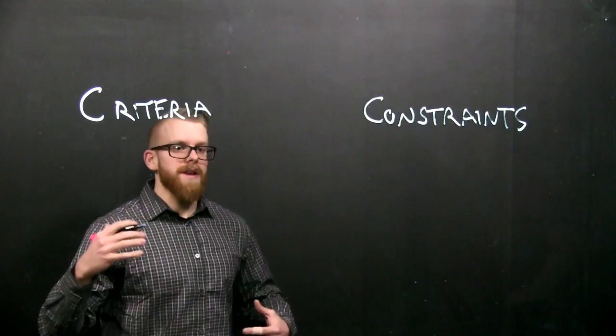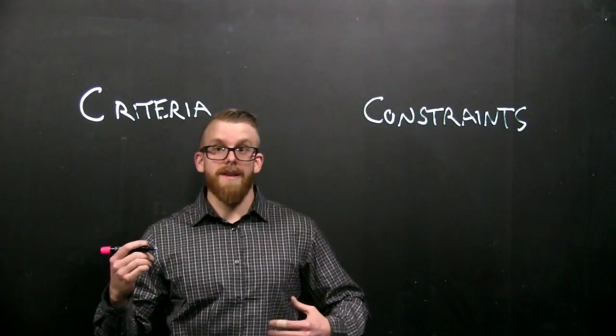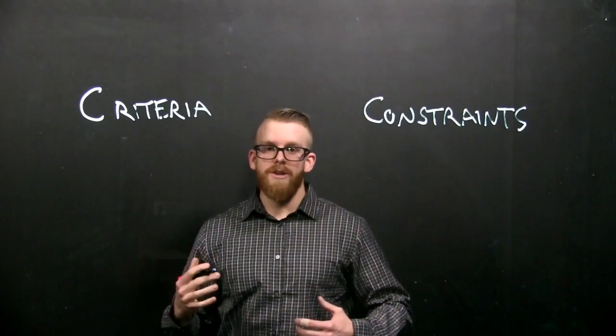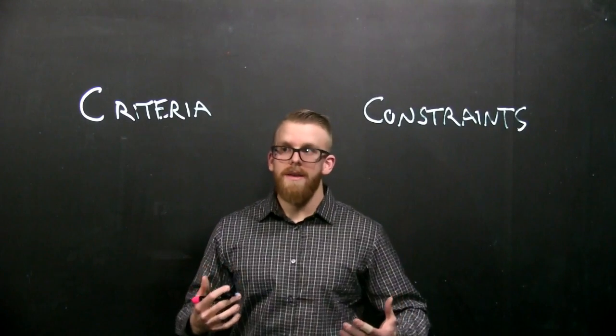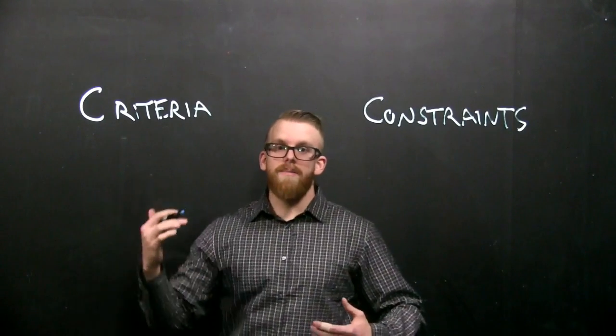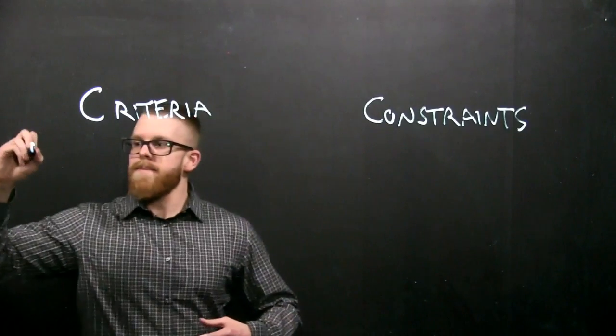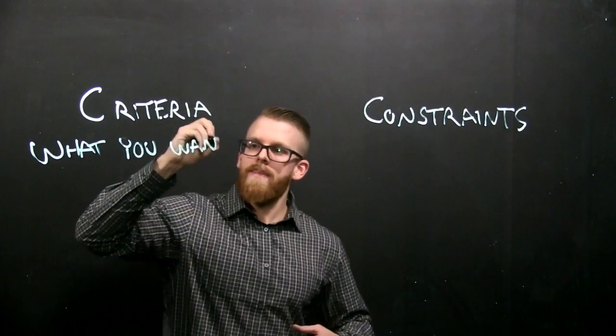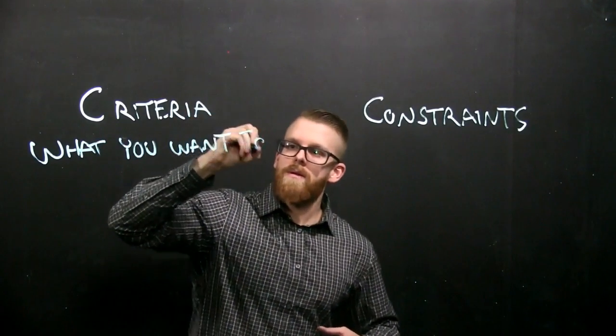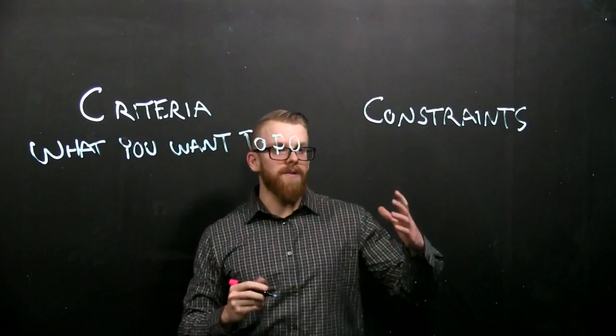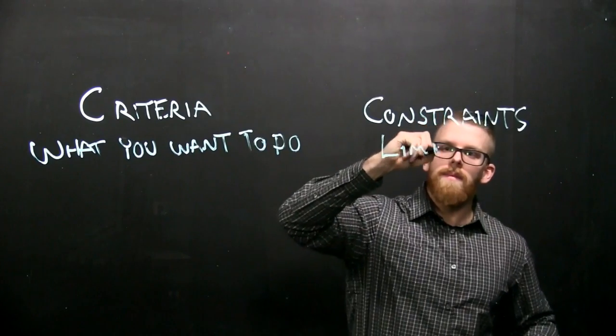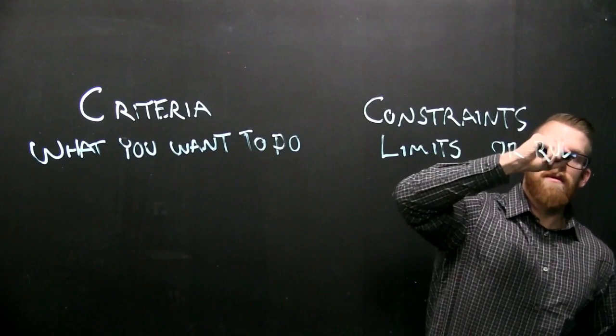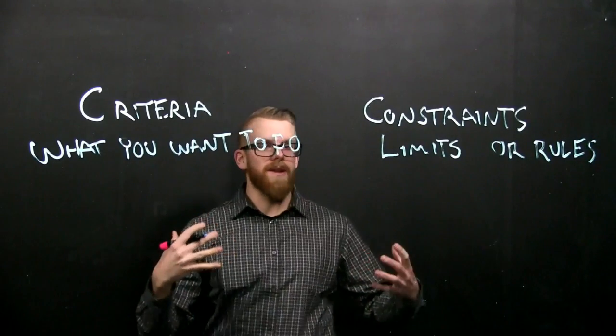Now, this is essential in getting your design right. If you don't know your criteria and your constraints, you're going to have an issue when it comes to actually building your product. Your criteria, once again, is going to be what you want to do, and your constraints are going to be limits or rules, what you're going to be limited by.